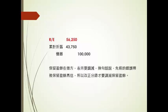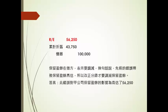我们把改正分录合并变成一套分录：借保留盈余56,250，借累计折旧43,750，贷机器10万。保留盈余在借方代表要调减，换句话说先前的错误会导致保留盈余高估，所以改正分录要调减保留盈余。因此这一题的答案是：这个错误对假公司的保留盈余的影响是造成保留盈余高估56,250。